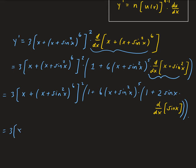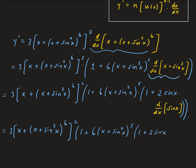So we have 3 times (x plus (x plus sine squared x) to the power of 6), all to the power of 2, times 1 plus 6 times (x plus sine squared x) to the power of 5, and then times (1 plus 2 times sine x times the derivative of sine x, which is cosine x). Then we close the first parentheses and the last parentheses.